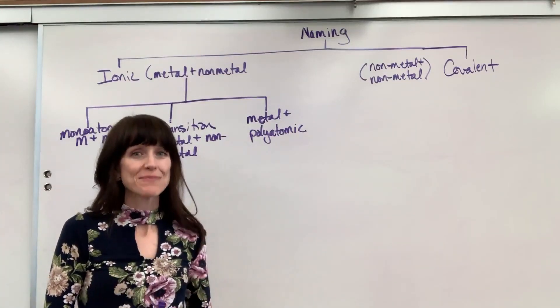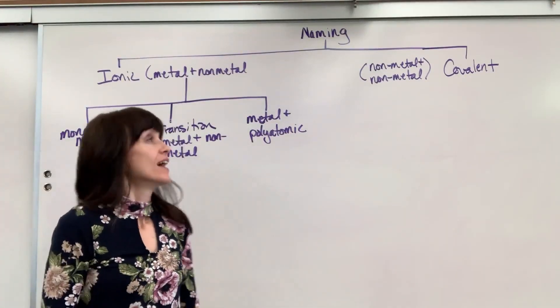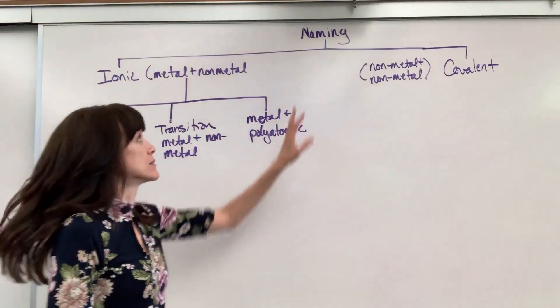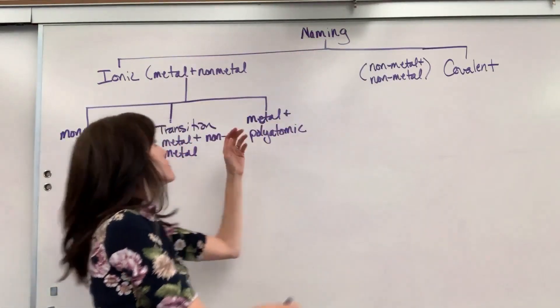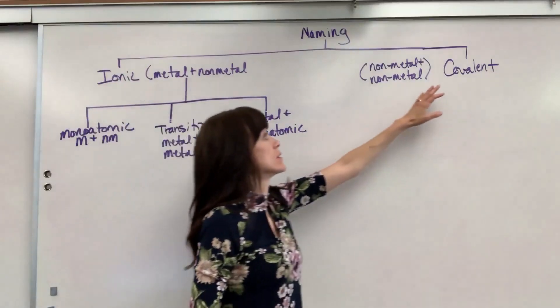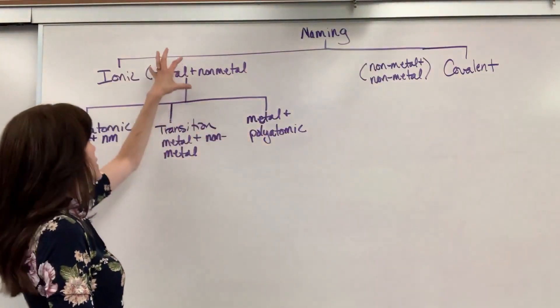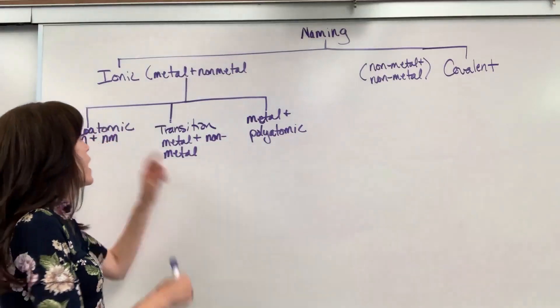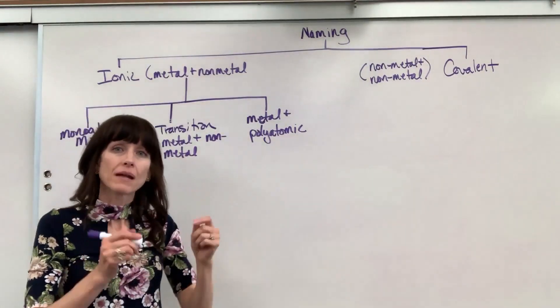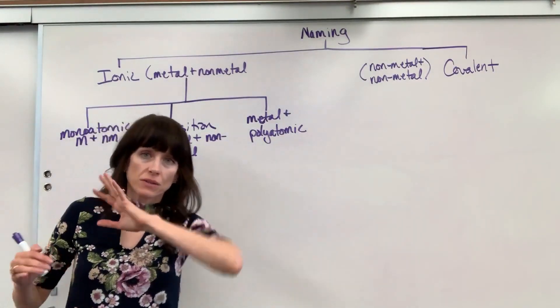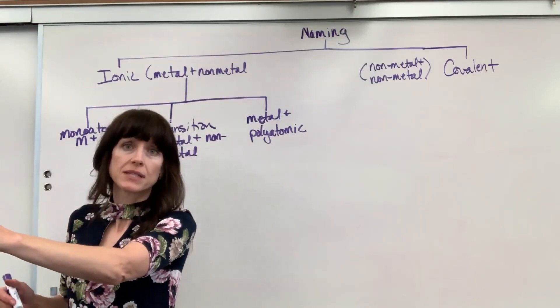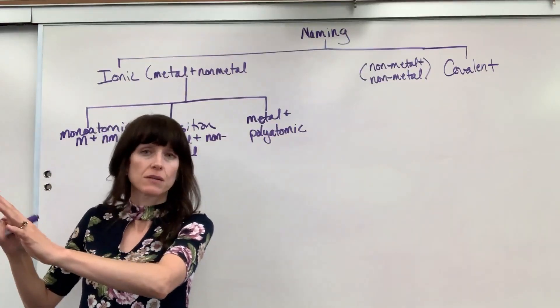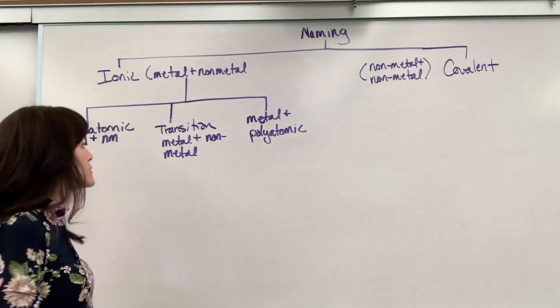Now we're going to name ionic bonds. I've created a flowchart for naming, broken into two parts: ionic bonds and covalent bonds. Right now we're going to focus on ionic bonds. This is really important - ionic bonds happen between a metal and a non-metal. Metals are on the left side of the periodic table, non-metals on the right side, separated by metalloids or semi-metals.